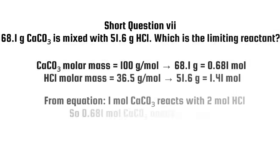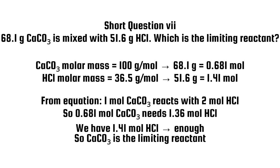Short question 7. 68.1G CaCO3 is mixed with 51.6G HCl, which is the limiting reactant? CaCO3 molar mass equals 100 grams per mole, 68.1G equals 0.681 moles. HCl molar mass equals 36.5 grams per mole, 51.6G equals 1.41 moles. From equation, 1 mole CaCO3 reacts with 2 moles HCl. So, 0.681 moles CaCO3 needs 1.36 moles HCl. We have 1.41 moles HCl, enough. So, CaCO3 is the limiting reactant.